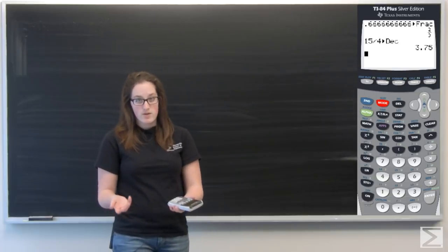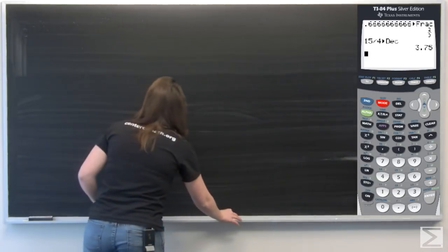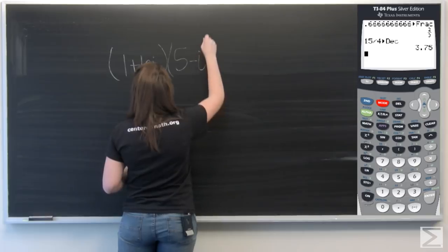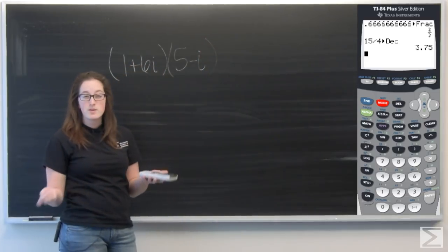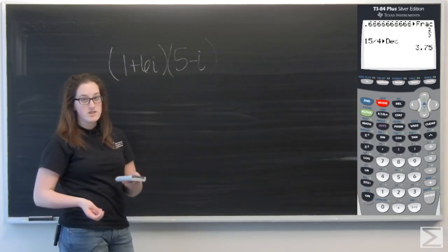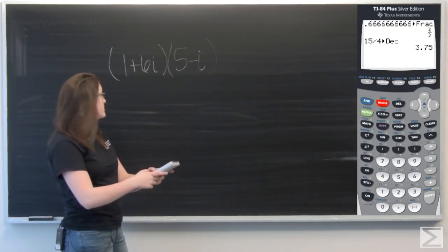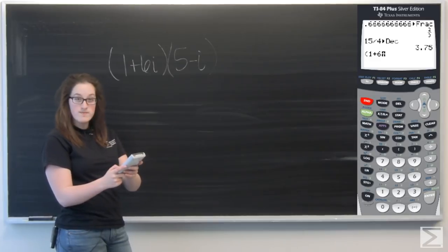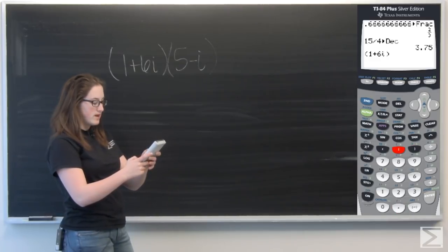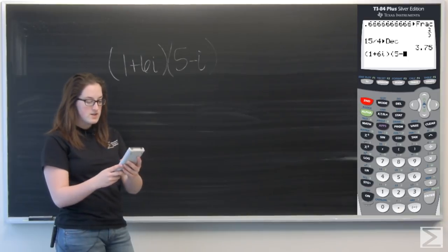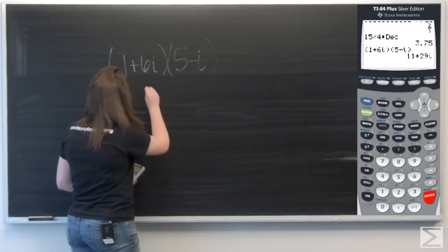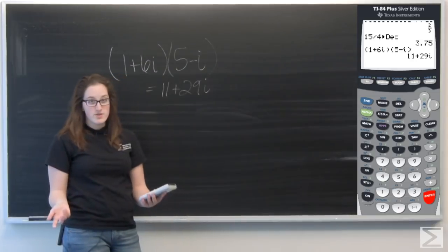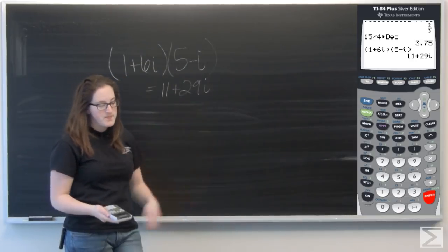So say I want to multiply two complex numbers by each other. And I don't want to foil it out, I'm a little rusty on my powers of I. I can actually type this in the calculator as is and get out a complex number as my answer. So 1 plus 6, and then I is located second decimal point, times 5 minus I. Go ahead and hit enter. And I get 11 plus 29I. So that's great. I didn't actually have to do any work, but I got an answer back that's a complex number.